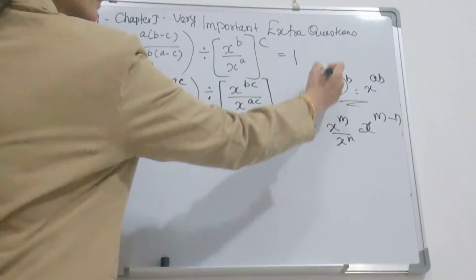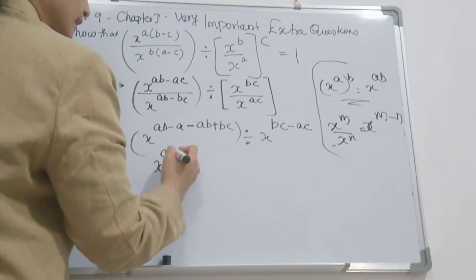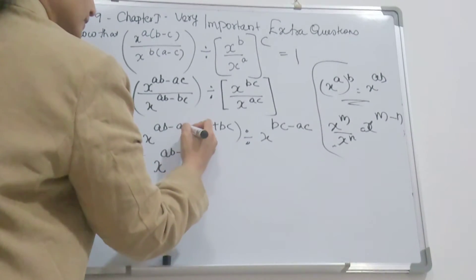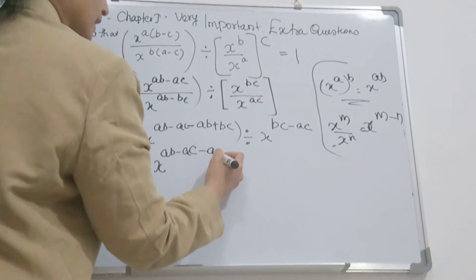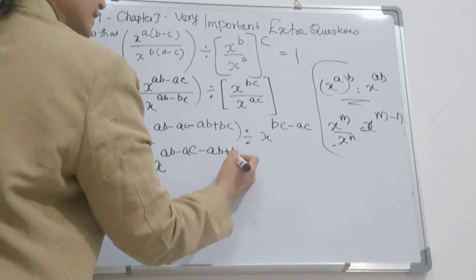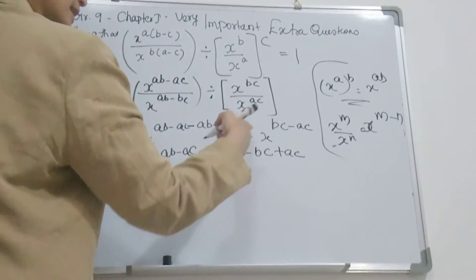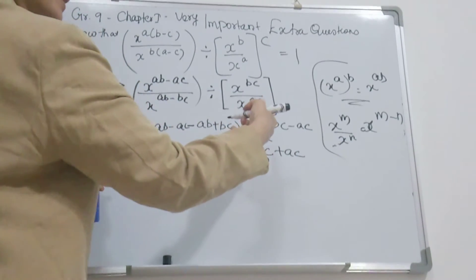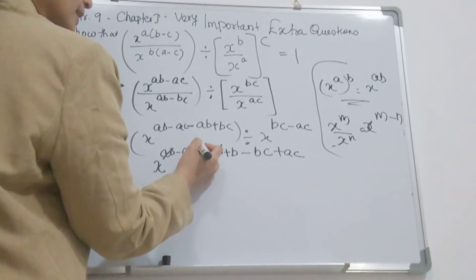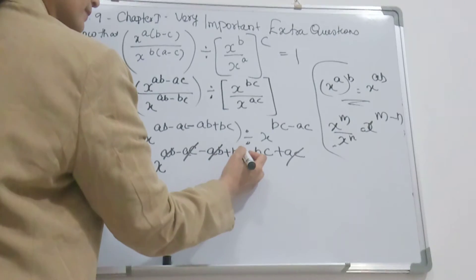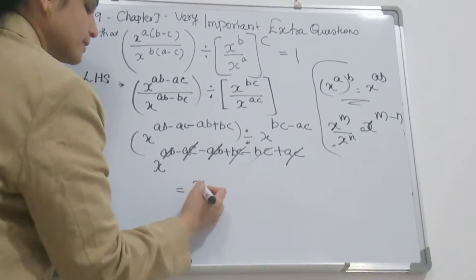Now, again, you use this formula. This becomes x^(ab - ac - ab + bc - bc + ac). That means the power should be subtracted. So ab and minus ab cancelled, minus ac and plus ac cancelled, bc and minus bc cancelled. So you got x^0.